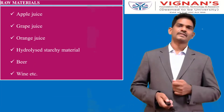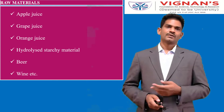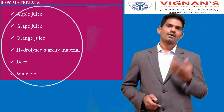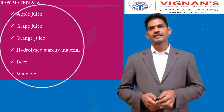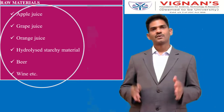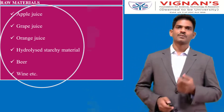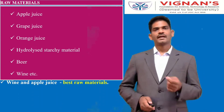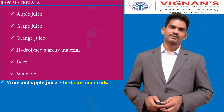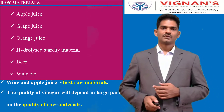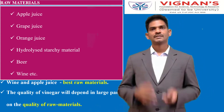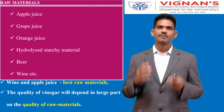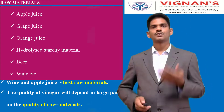The raw materials required for production of vinegar include apple juice, grape juice, orange juice, hydrolyzed starchy materials, beer, wine, etc. Wine and apple juice are the best raw materials for producing vinegar. The quality of vinegar production typically depends upon the quality of the raw materials — if the raw material quality is good, we will get a good quality product.